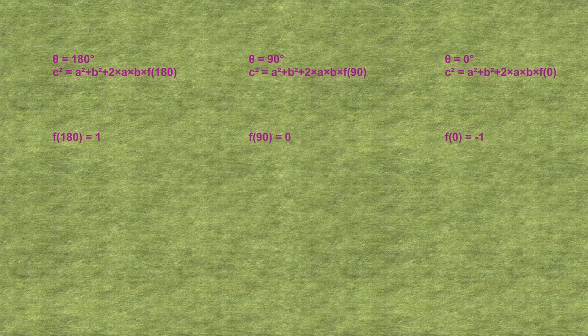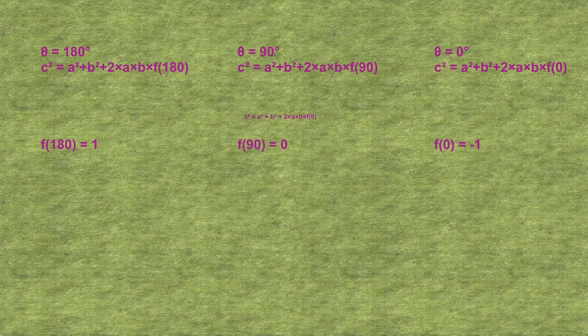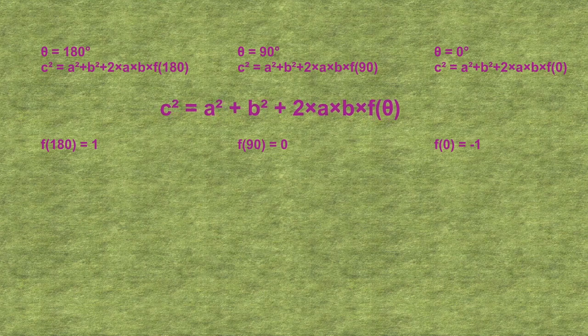Comparing the three cases for the angle equaling 180, 90, and 0 degrees, we see that we can standardize the formulas into a single formula as follows. c squared equals a squared plus b squared plus 2ab multiplied by some function of the angle, which we need to figure out.